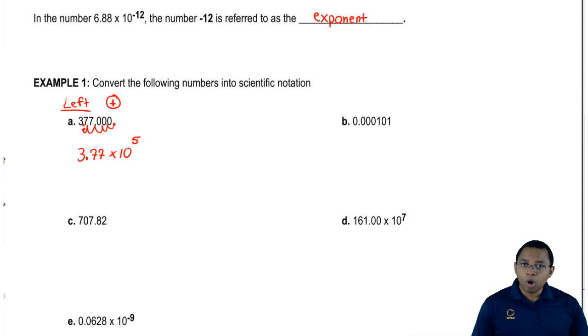Now, when I move the decimal over, those zeros at the end, we can drop those off and just simplify it to 3.77 times 10 to the 5. Remember, it's positive 5 because I had to go 5 spaces to the left.